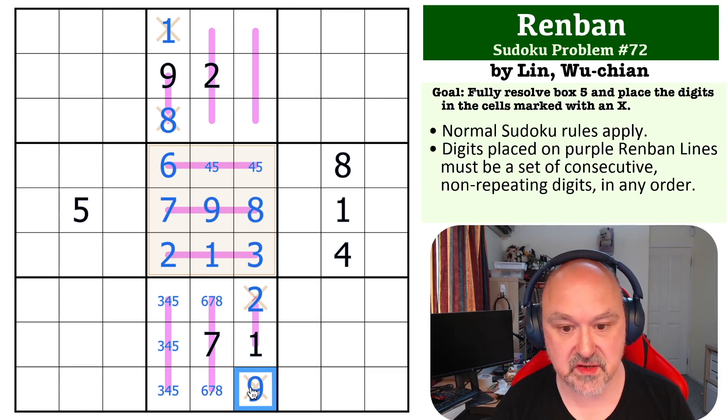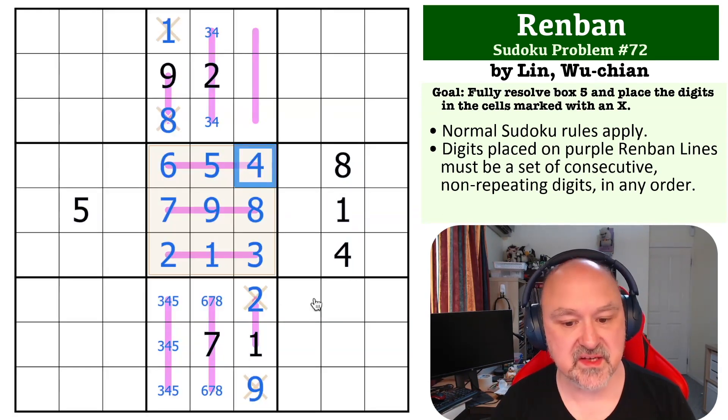Now up here we've got similar sorts of questions. We can't put 1 on this line, but it's got a 2, so this becomes 2-3-4. There is now 4 looking at this. This becomes the 5, this becomes the 4, and that completes the problem because you only needed to place the cells in box 5 and the cells with the X.